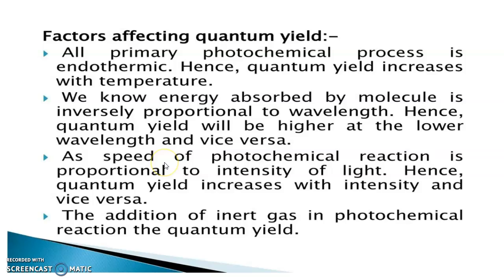See, that is explained in the next point. The speed of photochemical reaction is proportional to the intensity of light. Hence, quantum yield increases with intensity or quantum yield decreases with low intensity.